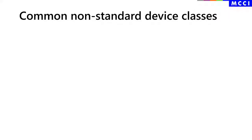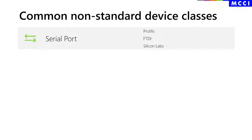Beyond the industry standard device classes, there are proprietary classes that are quite important in practice. Each class is implemented differently based on the manufacturer's decisions. USB serial converter chips are largely proprietary — the most popular are Prolific, FTDI, and Silicon Labs. You'll see Arduino and other embedded computers that use the CDC ACM class, but if it's a chip, it's probably proprietary.